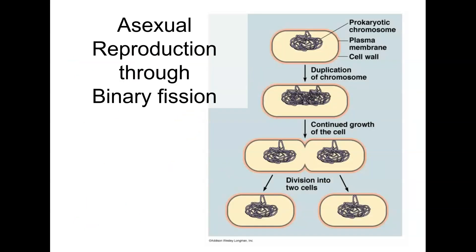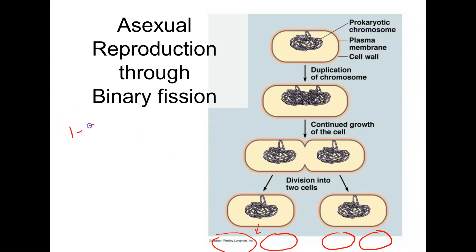Most prokaryotes can reproduce fairly quickly in favorable environments through a process called binary fission — one cell dividing into two, those two into four, four into eight, and so on. Under optimal conditions, most prokaryotes can reproduce in one to three hours, and some can reproduce in as little as 20 minutes.